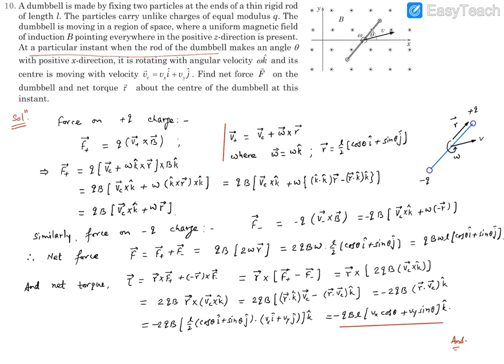At a particular instant of time, this dumbbell rod makes angle theta with the positive z direction as shown again in this figure. The dumbbell is rotating with angular velocity omega k cap, and its center is moving with velocity Vc. We need to find the net force acting on the dumbbell as well as the net torque about the center of the dumbbell at this instant.